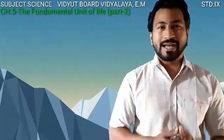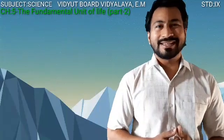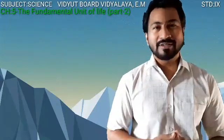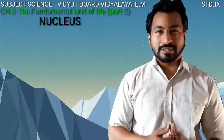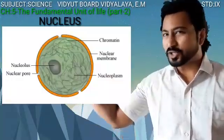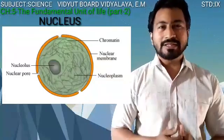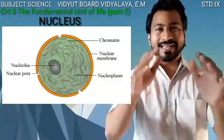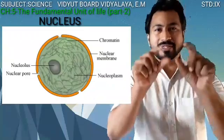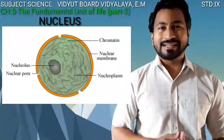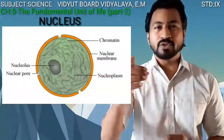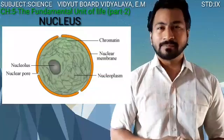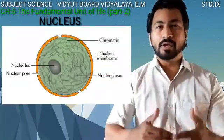Today our main focus of attention is the central region of a cell, that is the nucleus. Now let us examine the structure of a typical nucleus. A typical nucleus consists of an outer membrane which is mainly double-layered, and this double layer is not continuous — it has gaps known as nuclear pores.